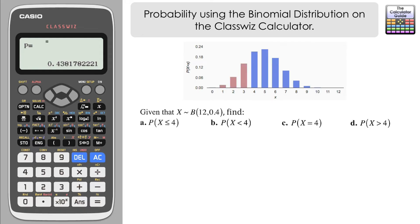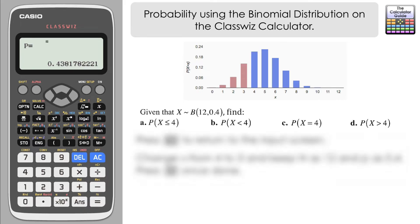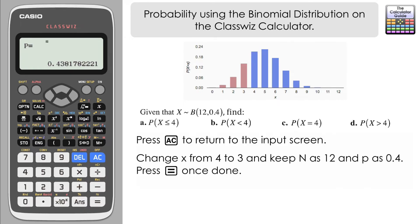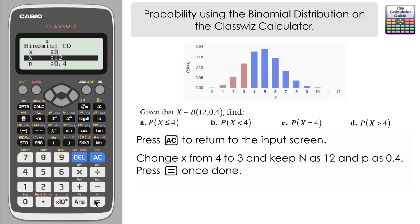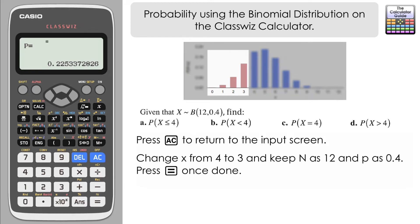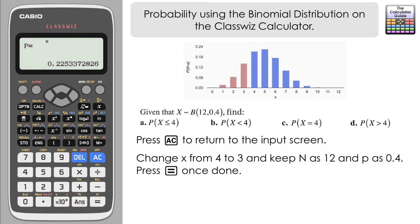So on the cumulative distribution on the ClassWiz, what we're going to input is our X value of 3, because that will tell us all the values that are less than 4 — so 3 and less. We just need to press AC which takes us back to the input screen, and we're just going to change our X value from 4 to 3 and press equals. Here we have our probability: 0.2253 to 4 decimal places. You can see on the diagram that we've got all the values that are less than 4, i.e. equal to 3 or less, displayed on the distribution diagram.